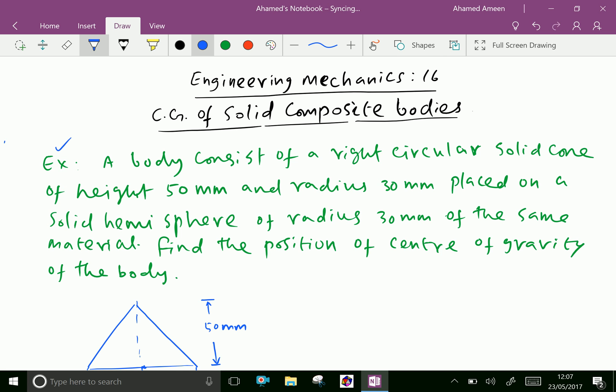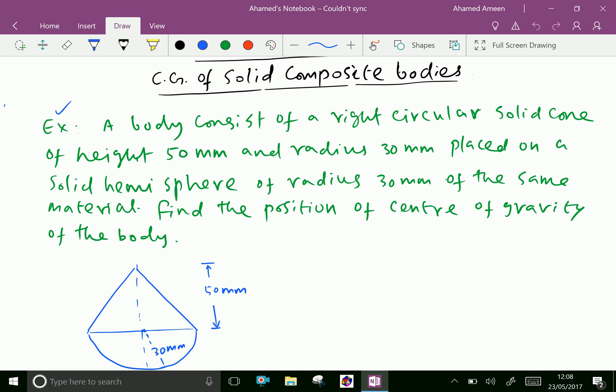A body consists of a right circular solid cone of height 50 mm and radius 30 mm placed on a solid hemisphere of radius 30 mm of the same material. Find the position of center of gravity of the body.